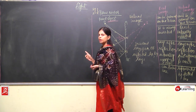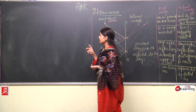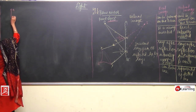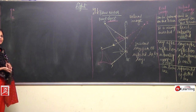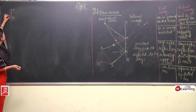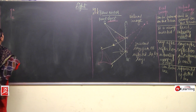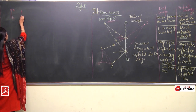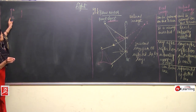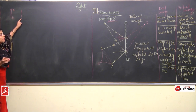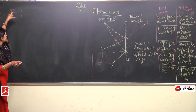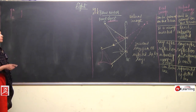One more very important point: what is an extended object? Suppose this is an extended object A and B. An extended object is made by the collection of various point objects. A big object is nothing but the collection of very small point objects — many, many point objects collected together make the extended object.